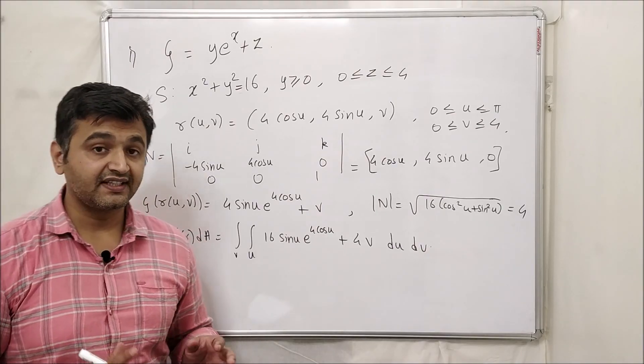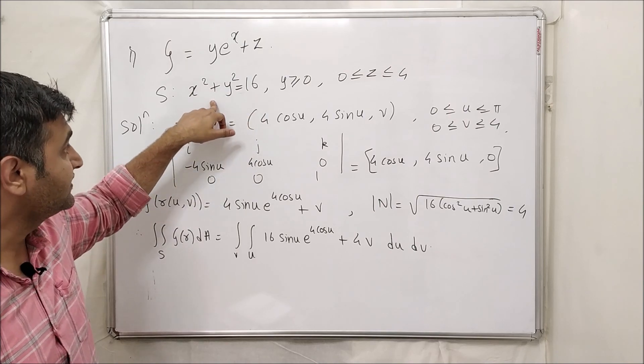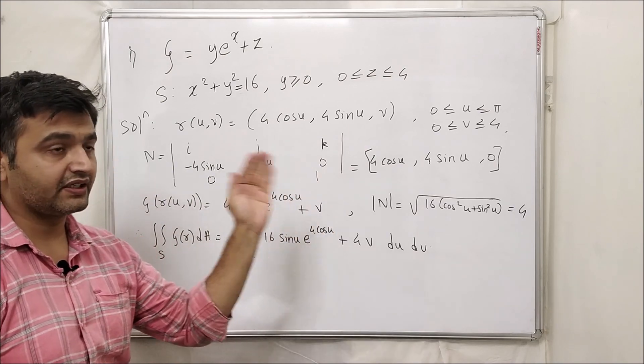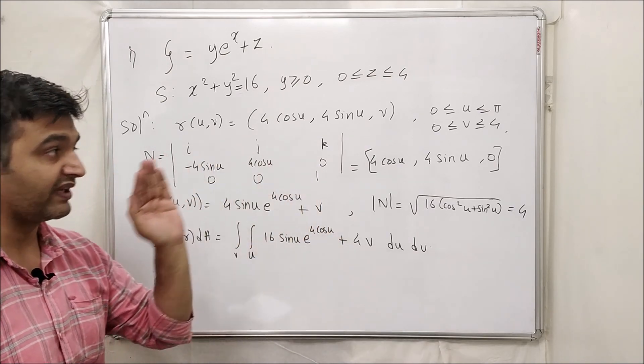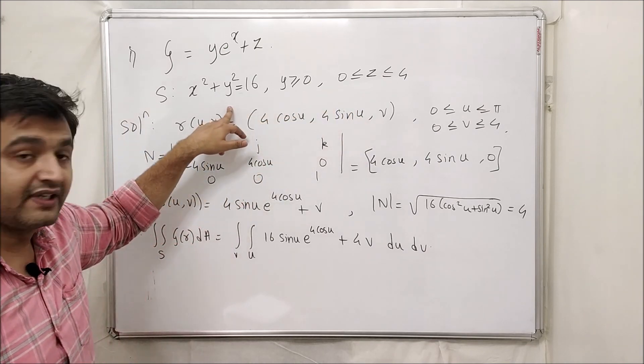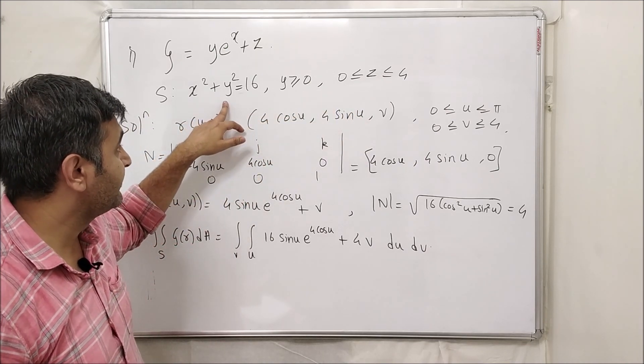So here is the first example. This is a scalar field given to you. Surface is a cylinder, but it's a part of a cylinder, half, not the complete cylinder. Y is greater equals 0, so kind of parabola you can say paraboloid, and the limits of z are 0 to 4. So as we have seen in our lecture on parameterization, what is the parameterization? It is 4 cos u, 4 sin u, and v.